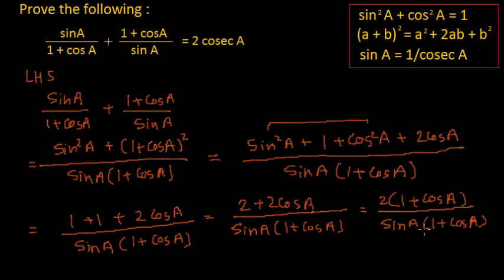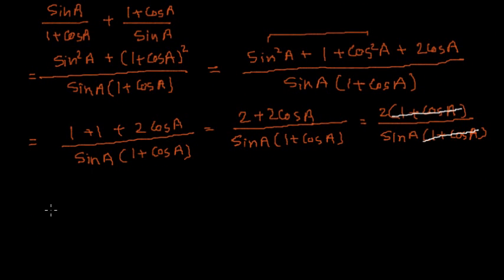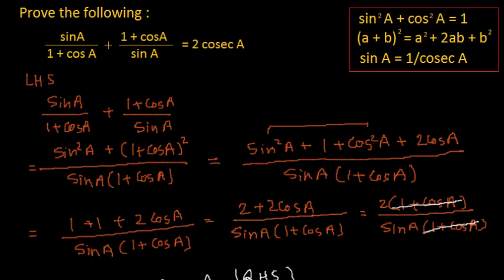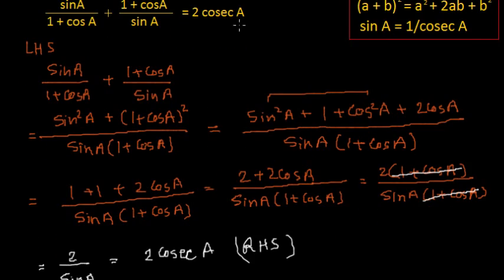This 1 plus cos a in the denominator will cancel this 1 plus cos a in the numerator, and from here we will get this equal to 2 by sine a. And 1 by sine a is cosec a, so this will be equal to 2 cosec a, which is actually the right hand side of that expression.